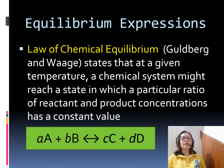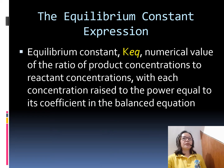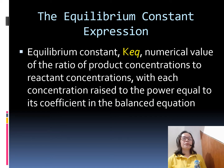To represent chemical equilibrium, A and B represent the reactants and C and D represent the products. The small letters represent the coefficients in a balanced equation. The equilibrium constant expression, Keq, is the numerical value of the ratio of product concentration to reactant concentration, with each concentration raised to the power equal to its coefficient in the balanced equation.